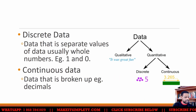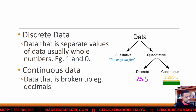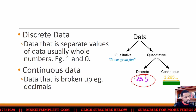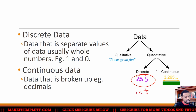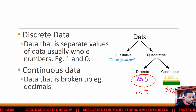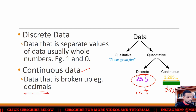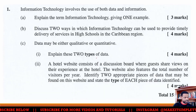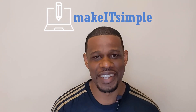Discrete data could be fixed, like whole numbers — integers. Continuous data would be like decimals. Continuous data is broken up into decimals, while discrete will be ones and zeros or whole numbers.